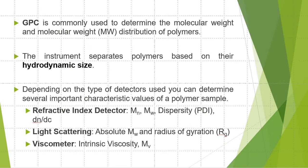GPC is commonly used to determine the molecular weight and molecular weight distribution of polymers. The instrument separates polymers based on their hydrodynamic size. This hydrodynamic size is related to the molecular weight. It is also dependent on the structural characteristics of a polymer and its interaction with the solvent that it's dissolved in.